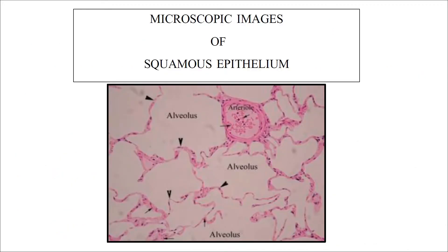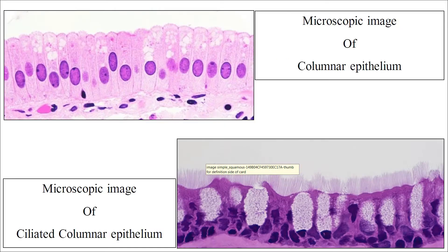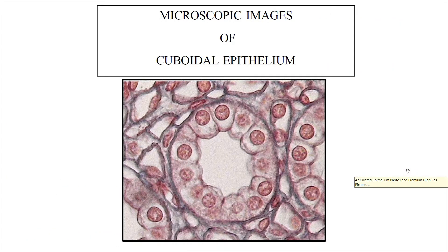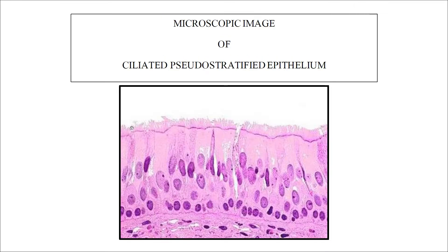This is the microscopic image of the squamous epithelial cell, followed by the microscopic image of columnar epithelium, ciliated columnar epithelium — where cilia are clearly visible — cuboidal epithelium, and ciliated pseudo-stratified epithelium.